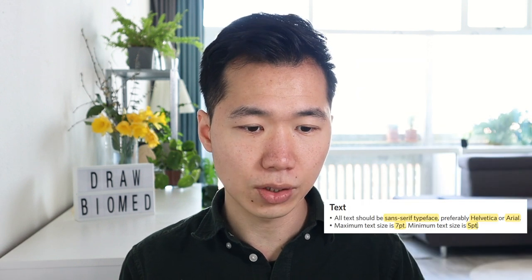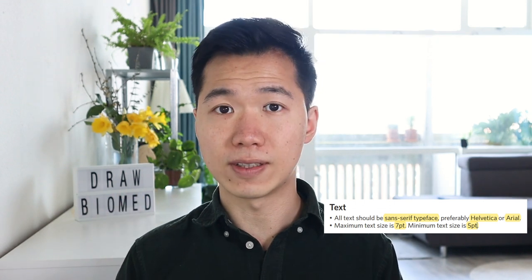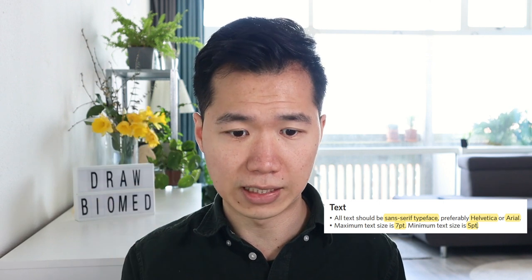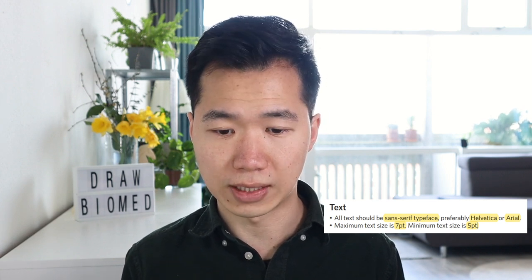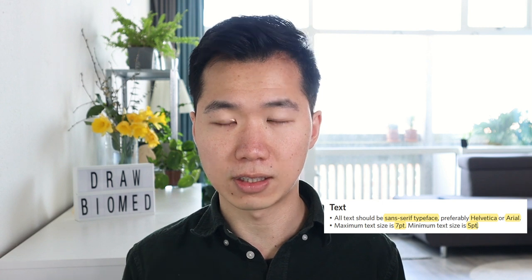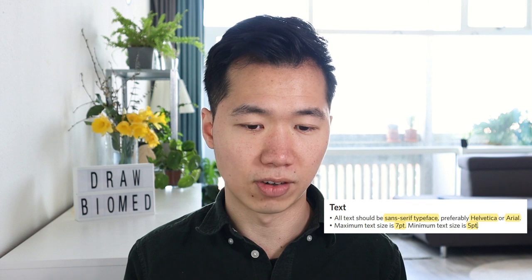Let's move on to text size. First, it says text should use a sans-serif typeface. Sans-serif is a typography term meaning there are no pointy ends at the tips of the letters. If you zoom in to these letters you see they don't have the little pointed tips like in Times New Roman. For digital publications they prefer sans-serif fonts, and the most common ones are Helvetica and Arial, which most computer operating systems already have.